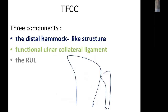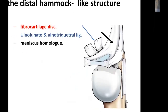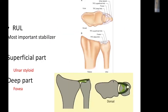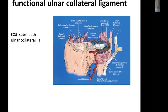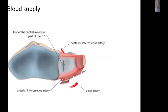The TFCC is formed of three main components: the distal hammock part, the dorsal and volar radioulnar ligaments, and the functional ulnocarpal ligament. The distal hammock part is formed mainly from the articular disc, ulnolunate, ulnotriquetral ligament, and meniscus homologue. The radioulnar ligament extends from the dorsal and volar margin of the sigmoid notch into the fovea. It is the stabilizing ligament to prevent radioulnar subluxation. The central part is devoid of blood supply and will not heal, so central tears are debrided and peripheral tears are repaired, similar to knee meniscal injury.